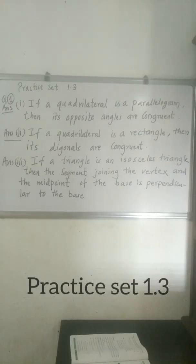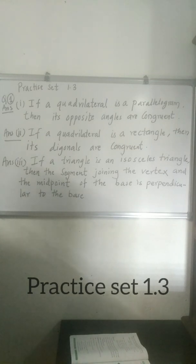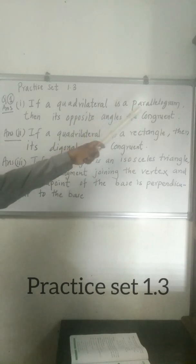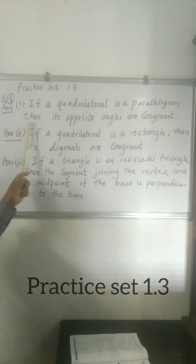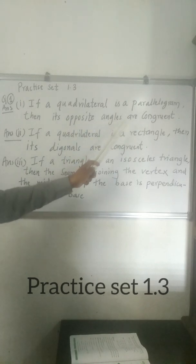Practice Set 1.3, Question 1: Write the following statements in if-then form. First: 'The opposite angles of a parallelogram are congruent.' In if-then form: If the quadrilateral is a parallelogram, then its opposite angles are congruent.